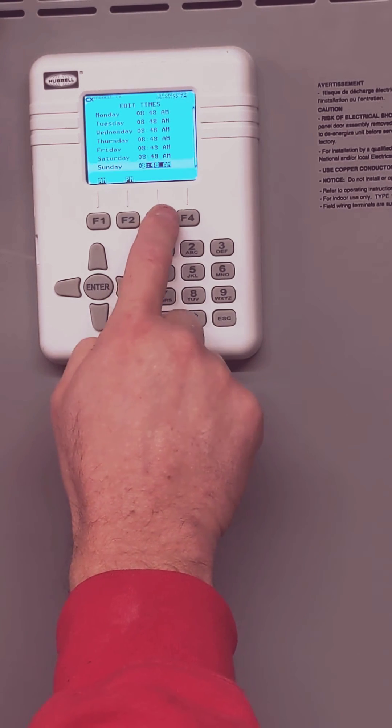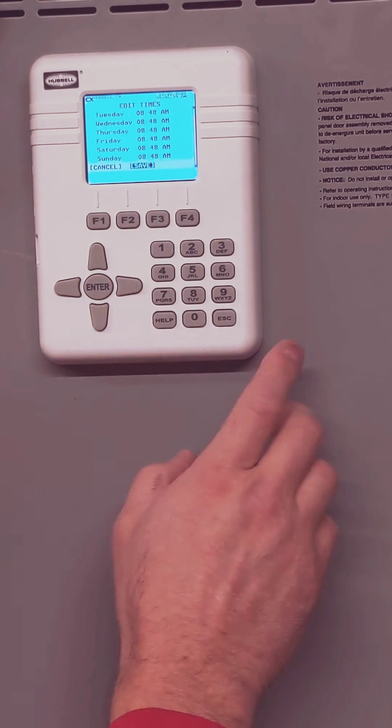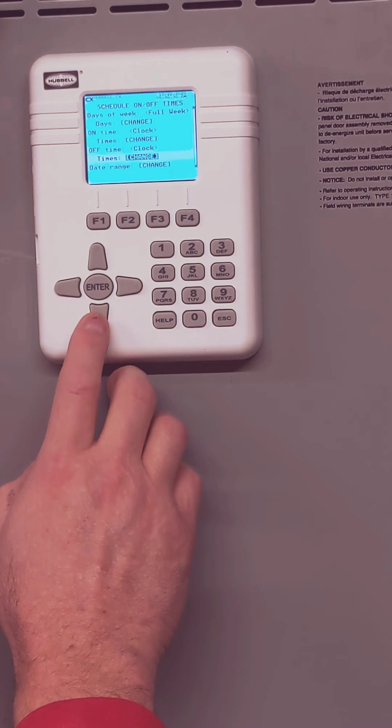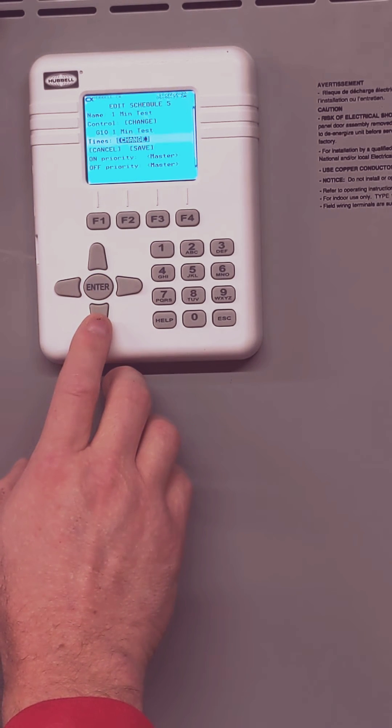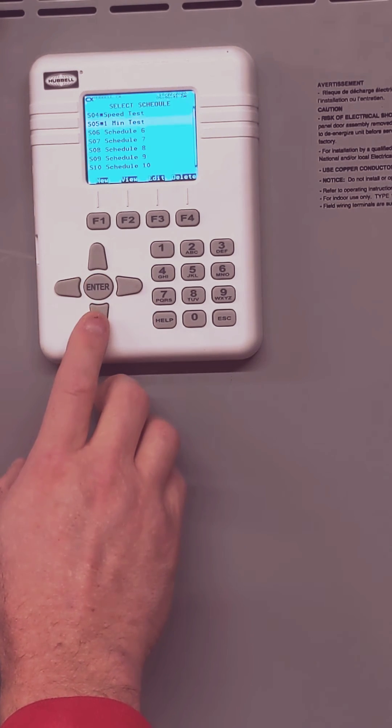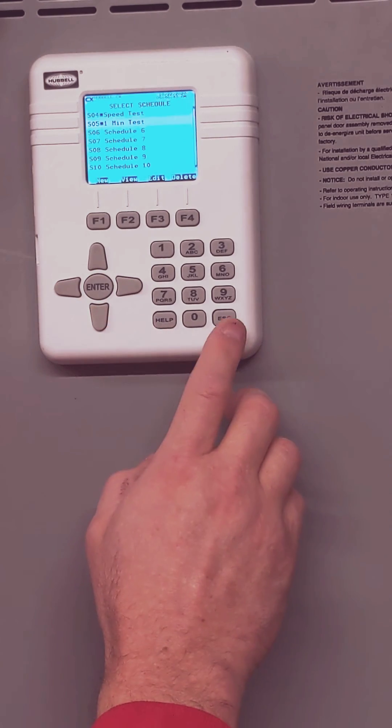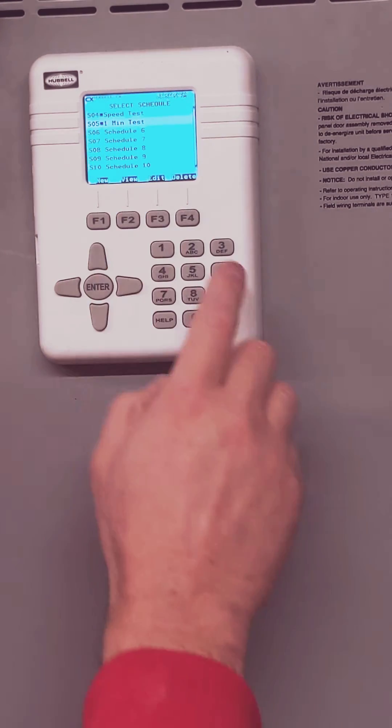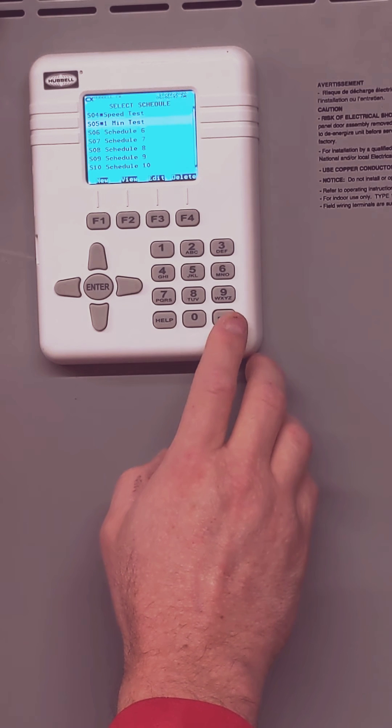Copy all the way down. Save, save, save. So we got a one minute test schedule set at 1:40, at 8:47. It's going to turn on in 13 seconds.